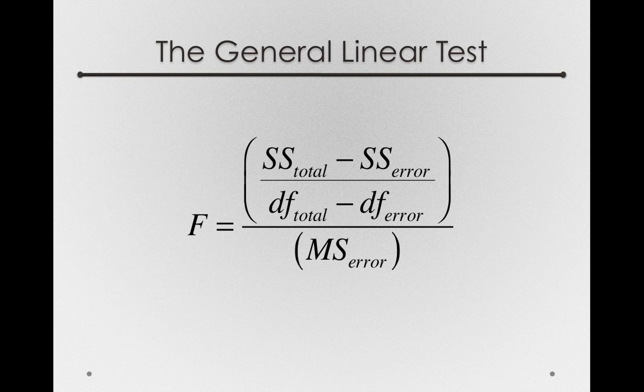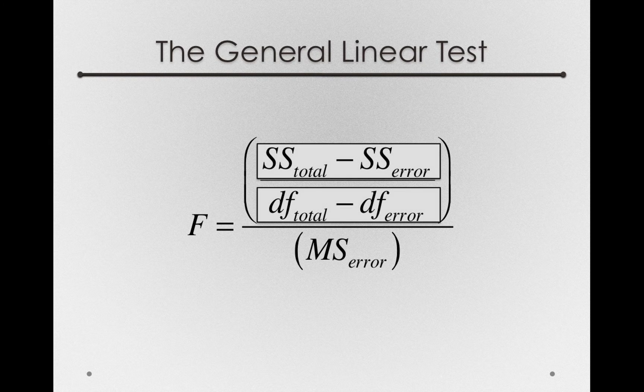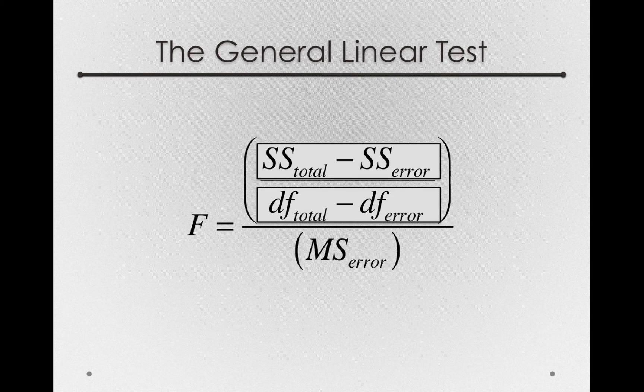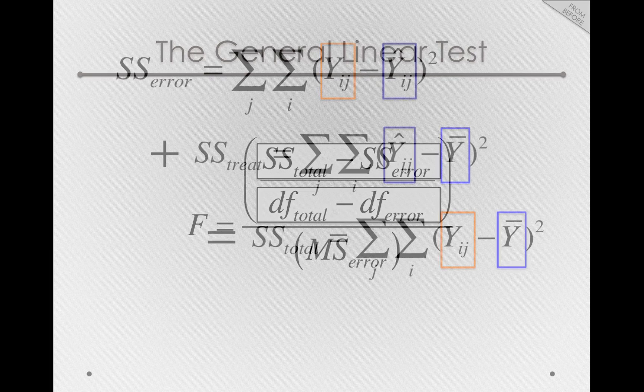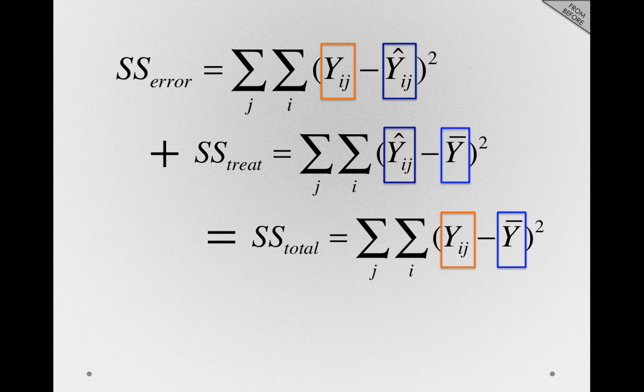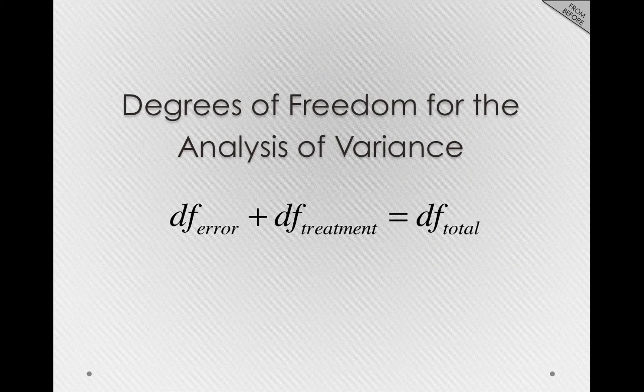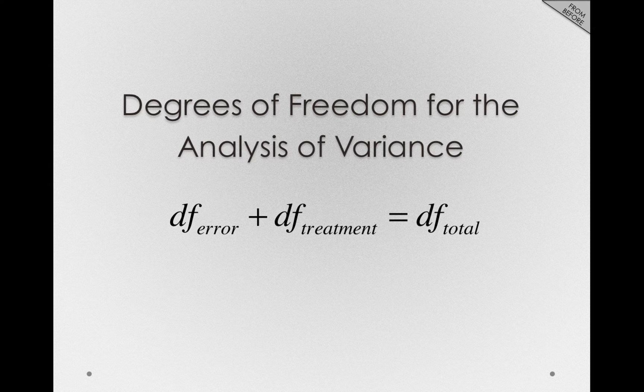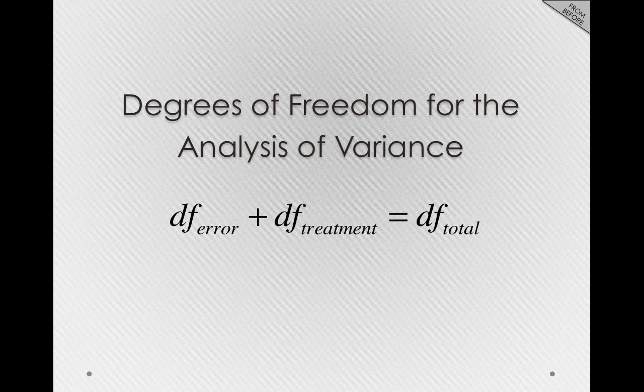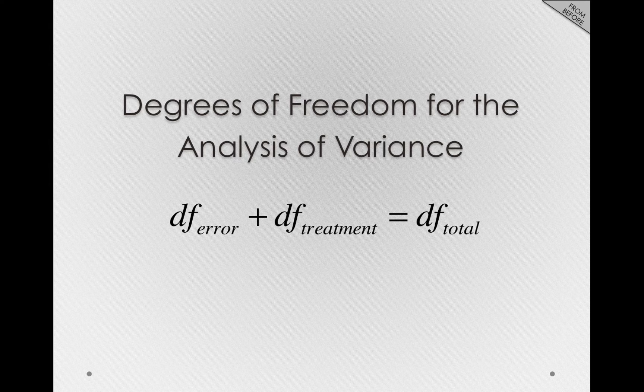And so if we actually find these differences, remember, we know the sums of squares will add. So sums of squares error plus sums of squares treatment is equal to sums of squares total. And degrees of freedom for the analysis of variance simply add: degrees of freedom error plus degrees of freedom treatment equals degrees of freedom total.